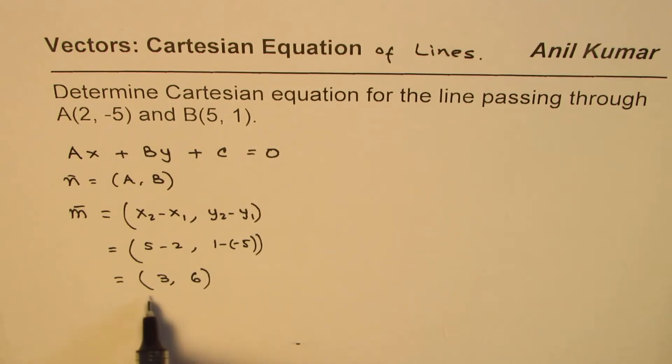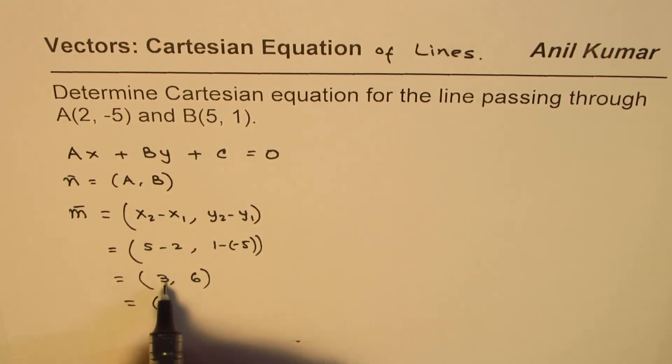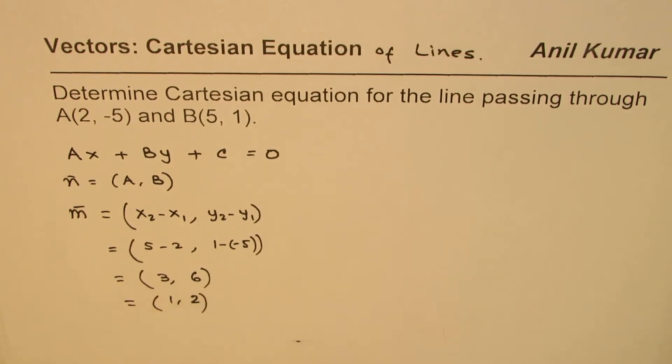We could always simplify this and also write this as dividing both by 3: (1, 2). So both are same, scalar multiples.